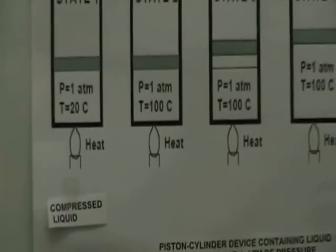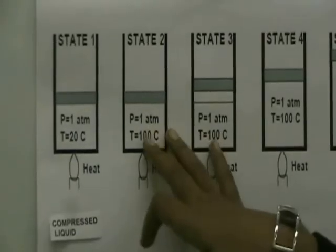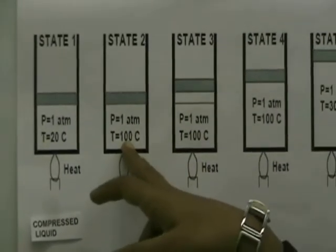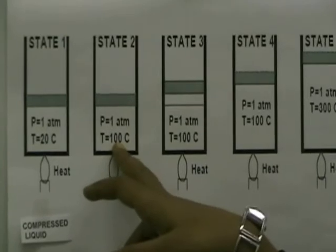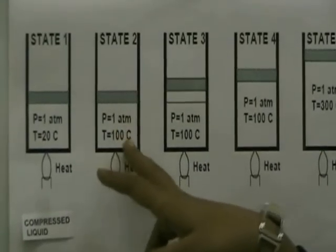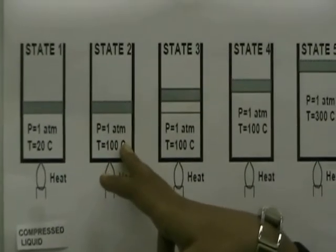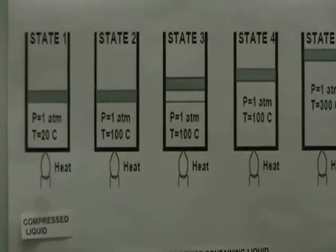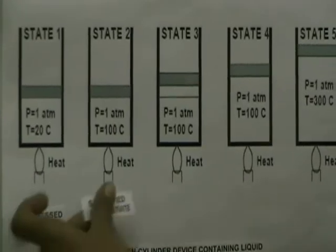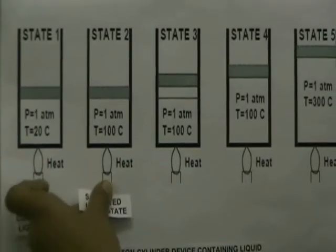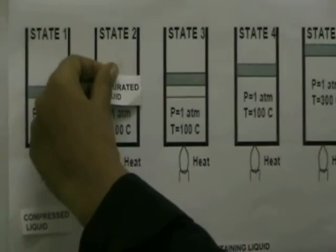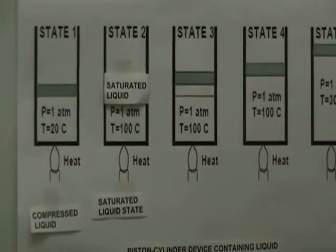Moving on to state 2, eventually the temperature of the water would reach 100 degrees Celsius. At this point, it is called a saturated liquid because it is about to vaporize. This is now in the saturated liquid state. I am going to label this as my saturated liquid state, and inside of state 2, we have saturated liquid.